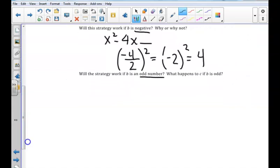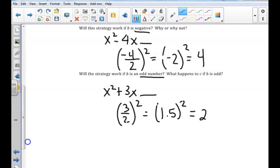In cases where it is an odd number, let's say we are provided with the expression x² + 3x and we need to create a perfect square. We would divide 3 in half and square it, so we would get 1.5² to obtain 2.25. The perfect square would be x² + 3x + 2.25. This also works when B is odd.